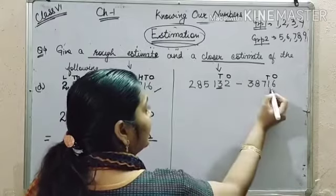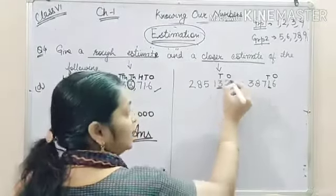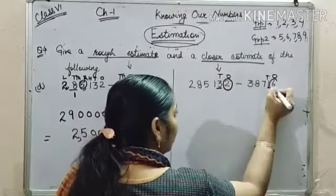That means we have to round off 10s place. And for this, we will check 1s place.